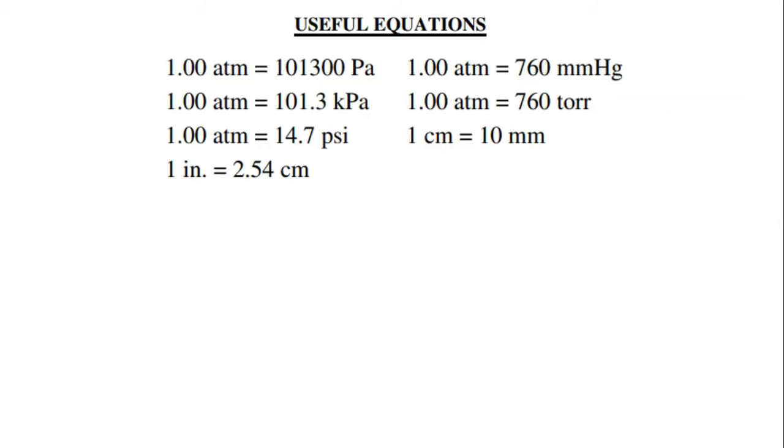This slide shows you another equation. As you can see, we have new ones. 1 cm is equal to 10 mm. 1 inch is equal to 2.54 cm. And what's new is the psi. 1.0 atm is equal to 14.7 psi, or pound per square inch. So some problems, they have this. So it's better to know, right?